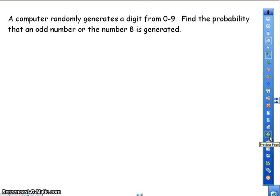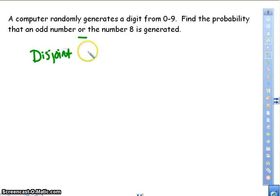And our last problem. A computer randomly generates a digit from zero to nine. Find the probability that an odd number or the number eight is generated. If I'm doing an or compound event, this is going to be disjoint. And if you look at your notes, when you do a disjoint, you do the probability of A plus the probability of B. You're adding them, whereas if it was an independent, you would multiply, or a dependent, you would multiply.